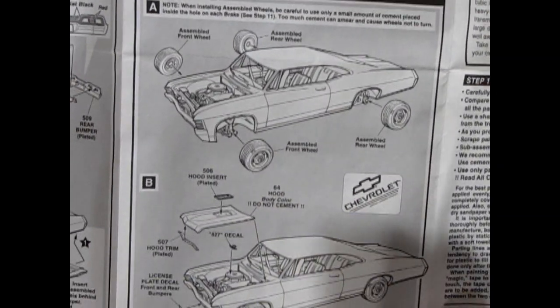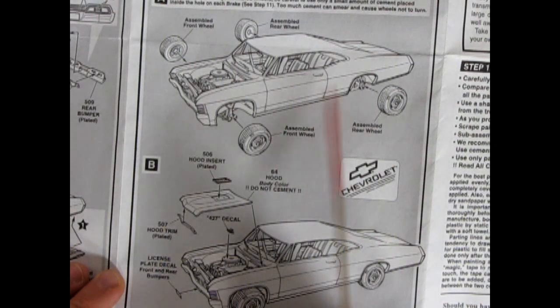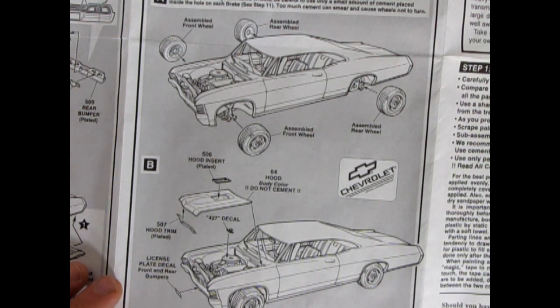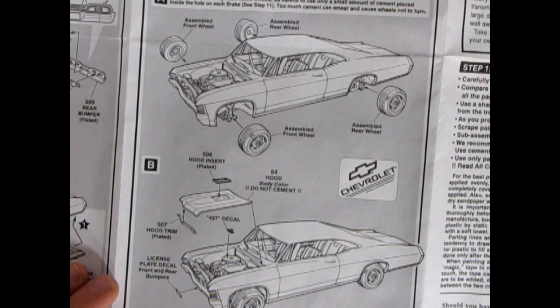And then finally, the last panel shows the whole thing going together with the wheels being assembled, the hood with the chrome insert and the chrome trim, and your 427 decal going on your air cleaner, as well as your license plates. So overall, a really nice instruction sheet. And now let's go down and look at the great components.